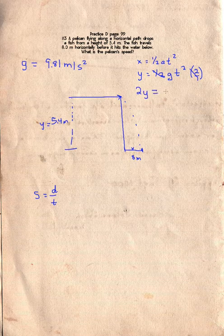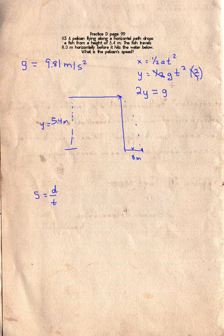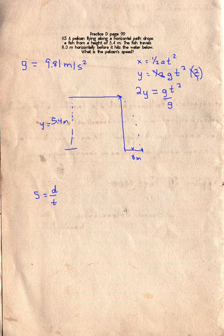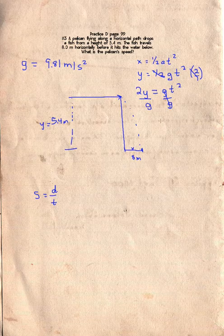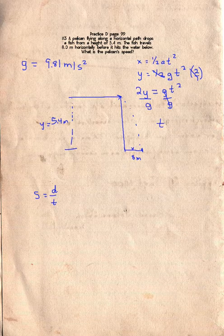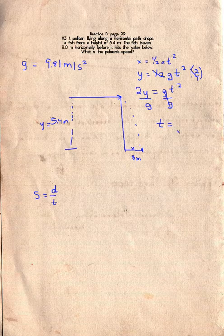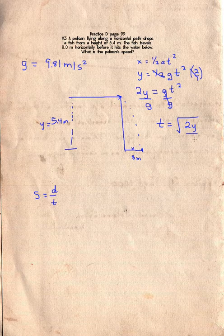2y is equal to gt squared. Now I'm going to divide both sides by g. That makes this a 1. But now I have t squared. I don't want t squared, so I'm going to do t is equal to the square root of 2y over g.